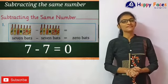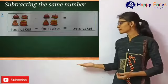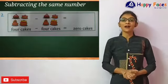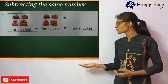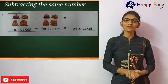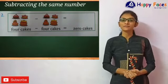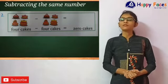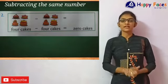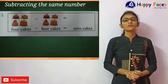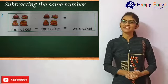Now let us take one more example. Look here. Here are 4 cakes minus 4 cakes. Now we have to find out the answer. If you take away 4 cakes from 4 cakes, now what will be the answer? Let us find out.